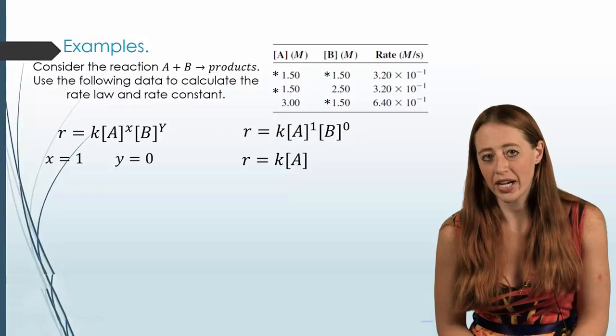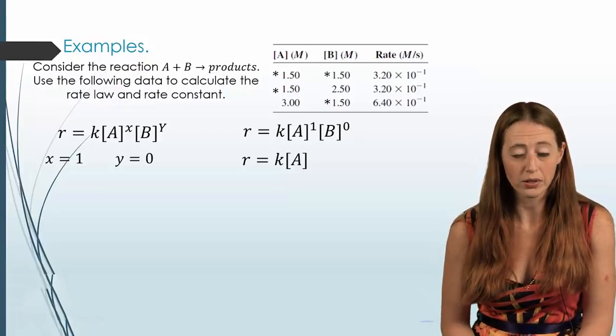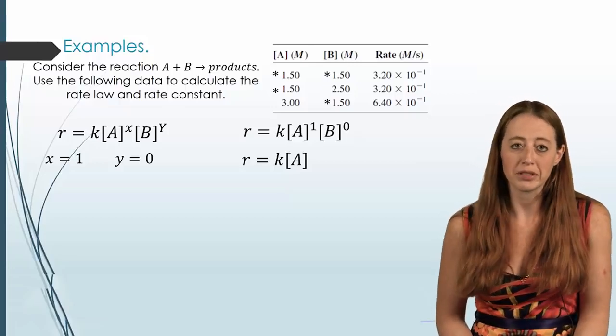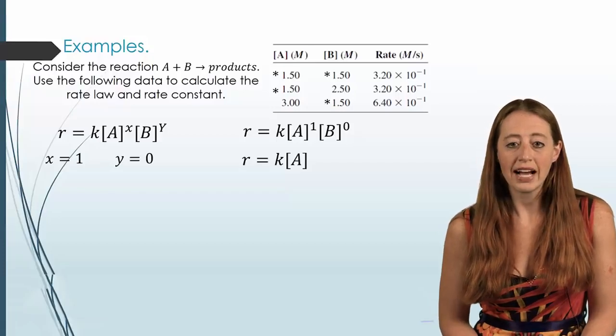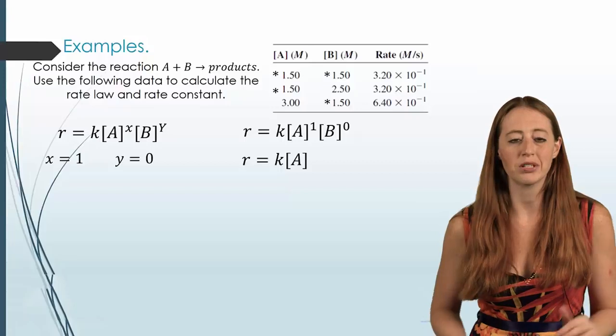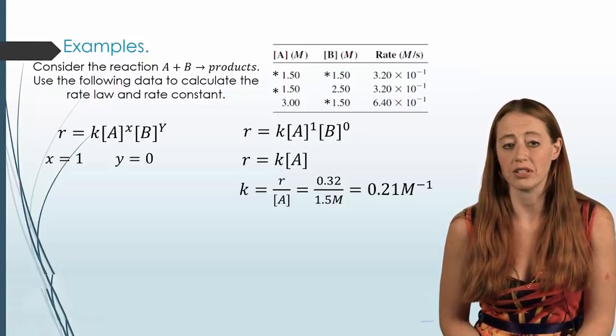Now, if you were doing this reaction for real, you would probably want to do this for all three trials, or however many trials you have, and then average the results. There would be experimental error. There would be some randomness to the situation. Now, in this case, it's fabricated data. The data is 100% perfect. And so we can just pick any trial, and every single one would lead to the exact same result.